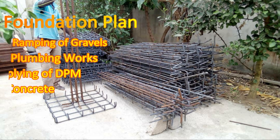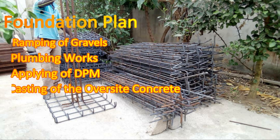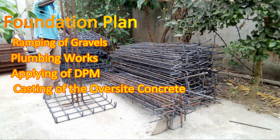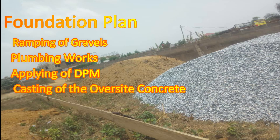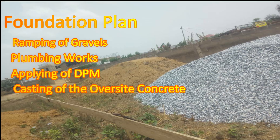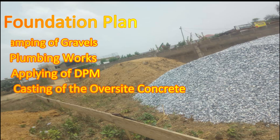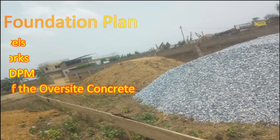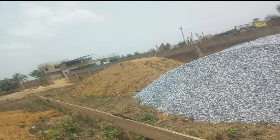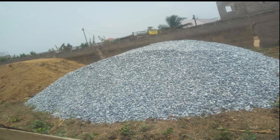After filling in the gravels or laterite, we do what we call ramping of the gravels — you have to ramp it. After that, plumbing takes place. After the plumbing, we cover the surfaces with black rubber, which is the DPM or damp-proof membrane. After applying the DPM, we cast the oversized concrete — that is what we do. I believe you've noted all these terminologies so you know exactly what stage you are in on a project.